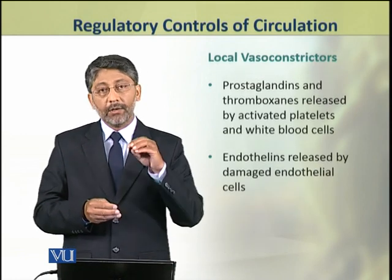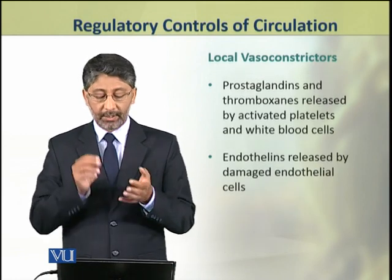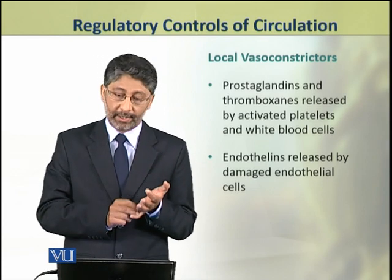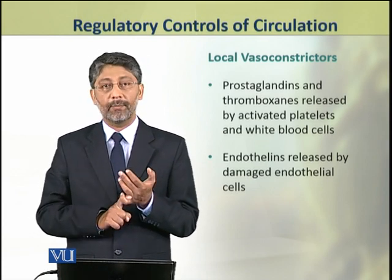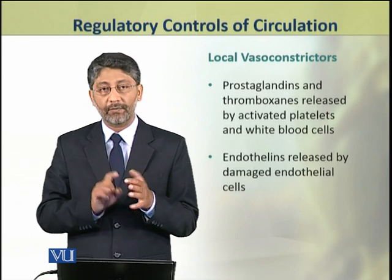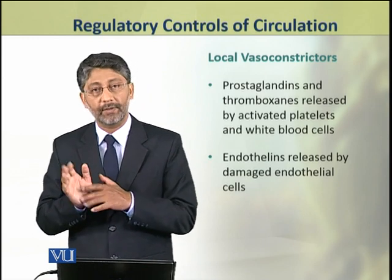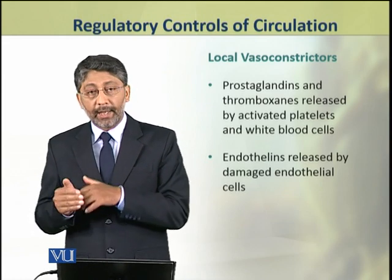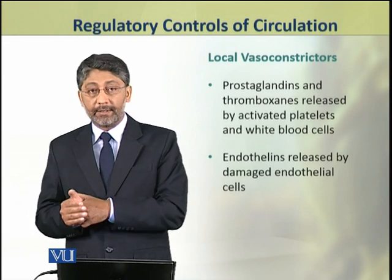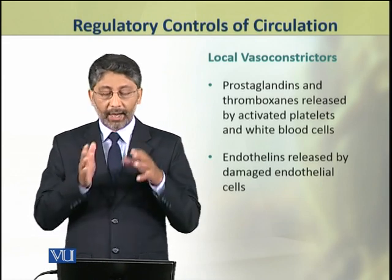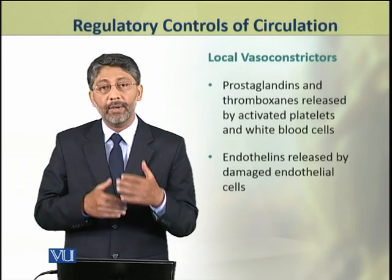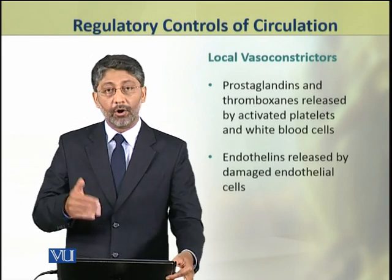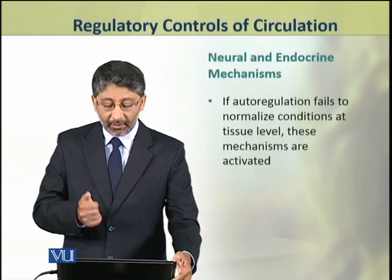The local vasoconstrictors include prostaglandins and thromboxins, which are released by activated platelets and white blood cells. In addition, endothelins, which damaged endothelial cells produce, also work as local vasoconstrictors to control tissue blood supply.